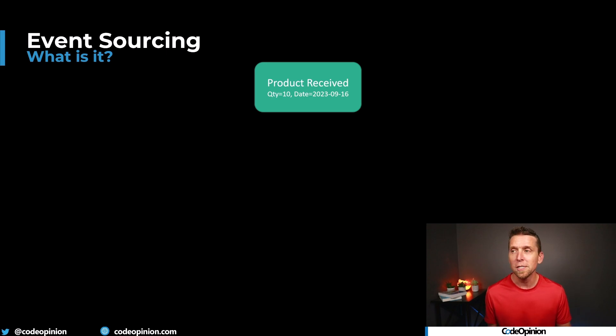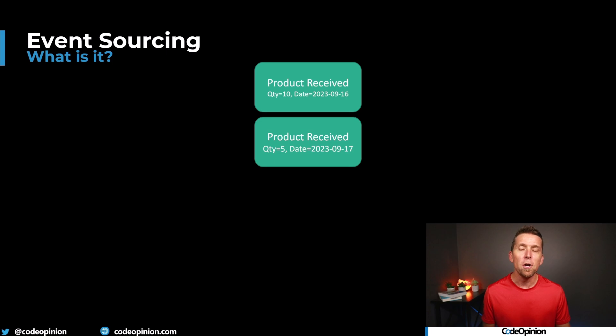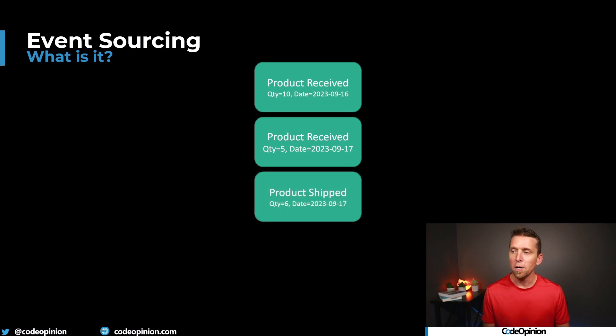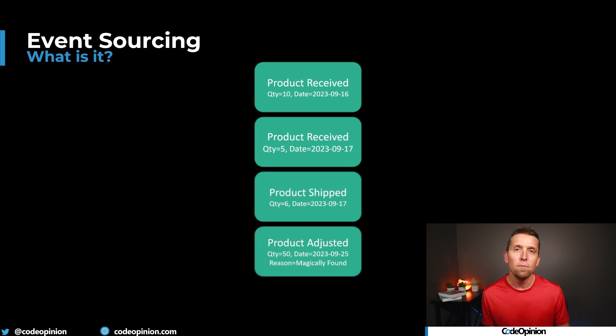Instead of recording current state, rather I'm just recording a series of events that gets us to where we are now. So maybe I have a product received event, another product received event, a product was shipped, and then we did an inventory adjustment. So we adjusted some inventory. We're recording all these series of events to get us to where we are now. That's how we're recording state with our events.